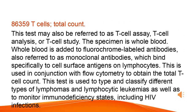T-cells, total count. This test may also be referred to as T-cell assay, T-cell analysis, or T-cell study. The specimen is whole blood. Whole blood is added to fluorochrome labeled antibodies, also referred to as monoclonal antibodies, which bind specifically to cell surface antigens on lymphocytes. This test is used in conjunction with flow cytometry to obtain the total T-cell count. It is used to type and classify different types of lymphomas and lymphocytic leukemias as well as to monitor immunodeficiency states, including HIV infections.